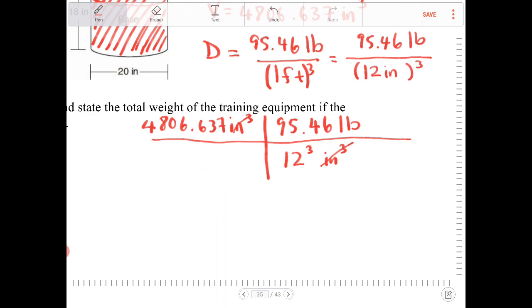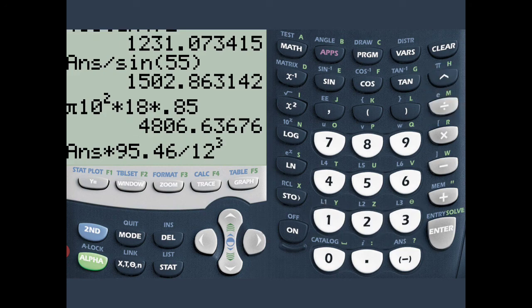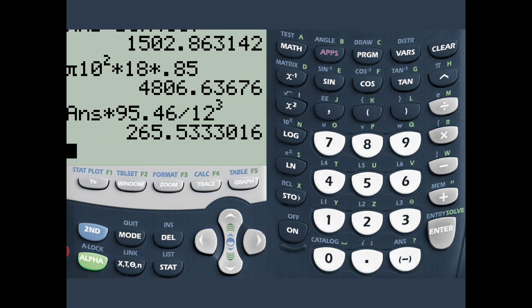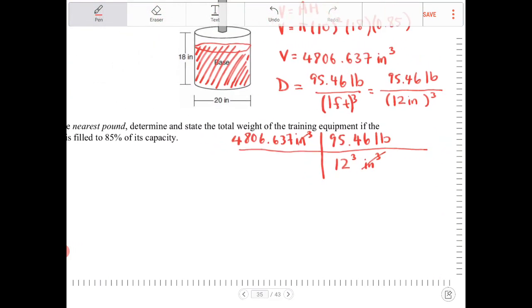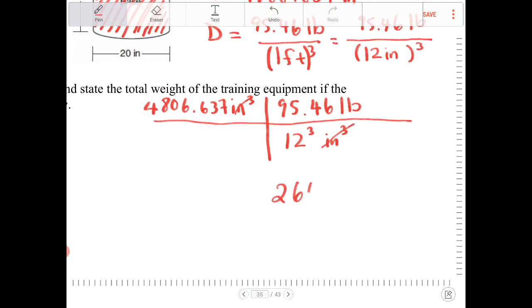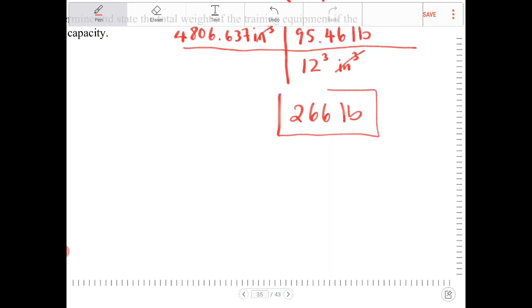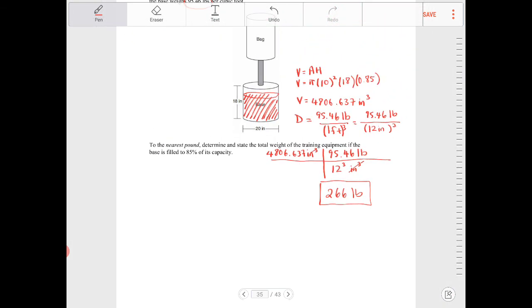So I'm going to take that number that I found a moment ago, multiply that by 95.46, and then divide by 12 to the 3rd power. And that would be 265.533. But they want us to round to the nearest pound, so that would be 266 pounds.